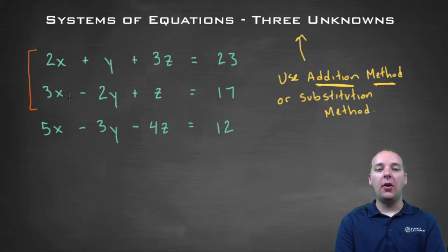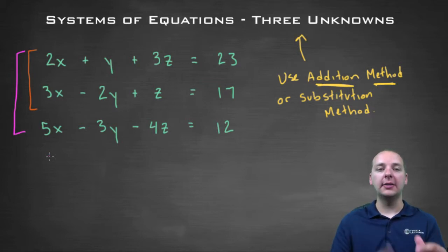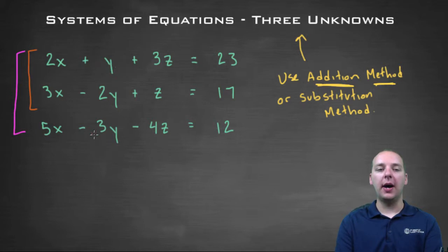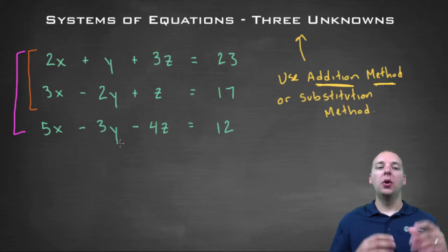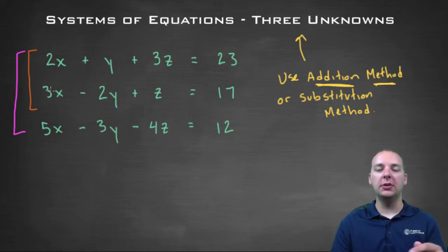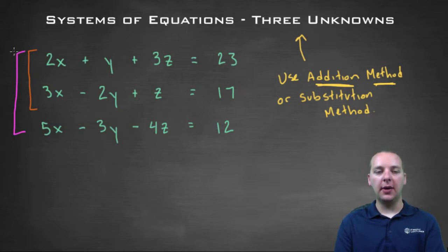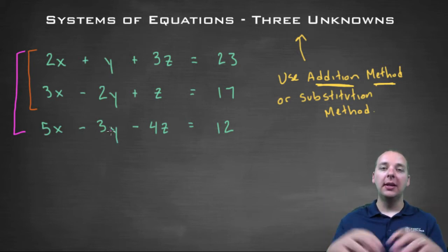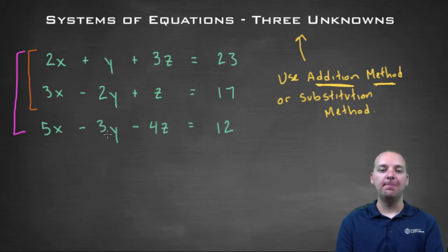I also notice that if we combine the first and third equations, we could also eliminate y's, because we have a y and a minus 3y. We can multiply the top equation by 3 to get a 3y and a minus 3y. So combining the first two equations gives a new equation with only x's, z's, and constants — the y's are gone. Combining the first and third rows also gives an equation with only x's, z's, and constants. That will reduce it to a smaller system. Once you knock this down to a smaller system, it becomes one we're comfortable solving.